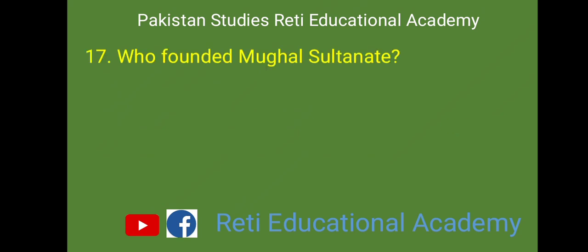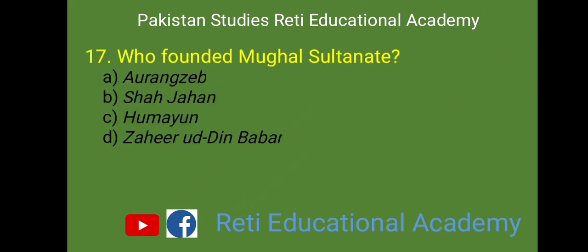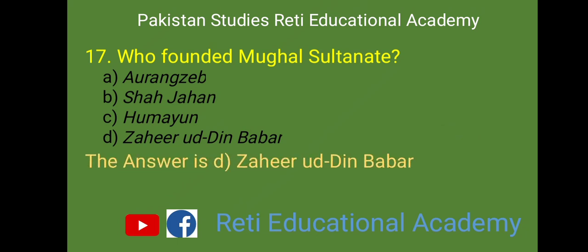MCQ number 17: Who founded the Mughal Sultanate? A. Aurangzeb, B. Shah Jahan, C. Humayun, D. Zahiruddin Babur. And the right answer is D. Zahiruddin Babur.